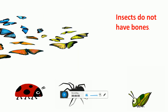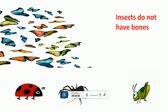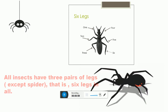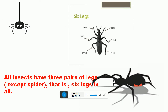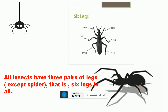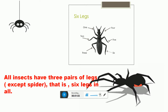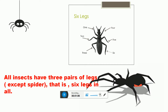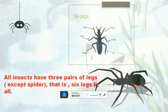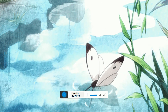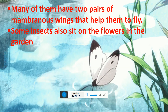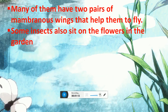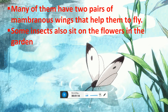Insects do not have bones. All insects have three pairs of legs, that is six legs in all. Many of them have two pairs of membranous wings that help them to fly.